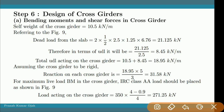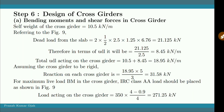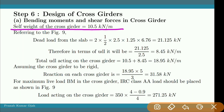For the design of the cross girder, first of all we have to calculate the required bending moment and the shear forces in the cross girder. We will note down the self weight of the cross girder, which is 10.5 kN per meter, which is already calculated in the last video.